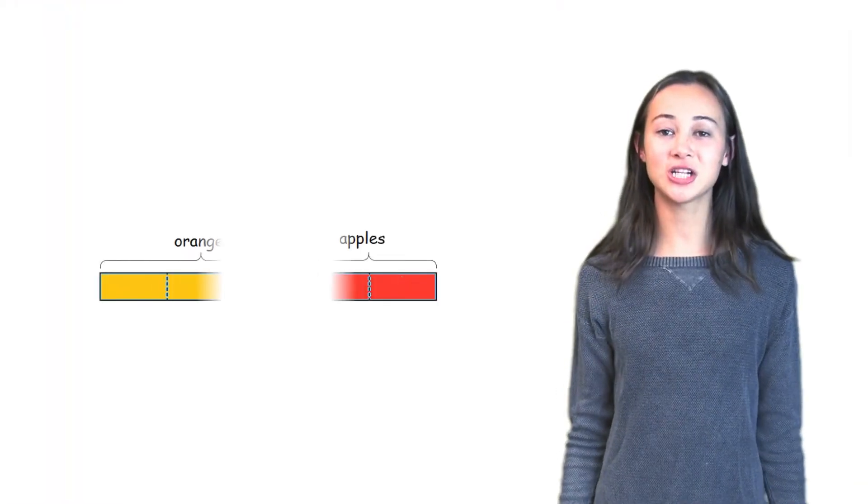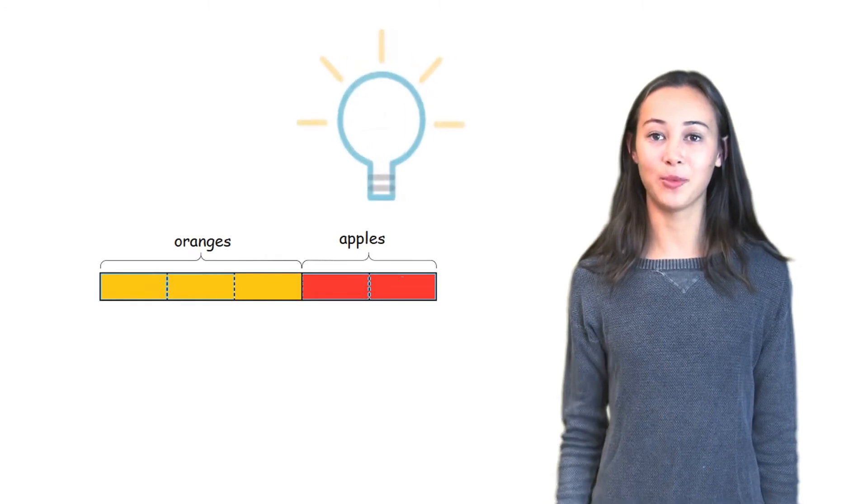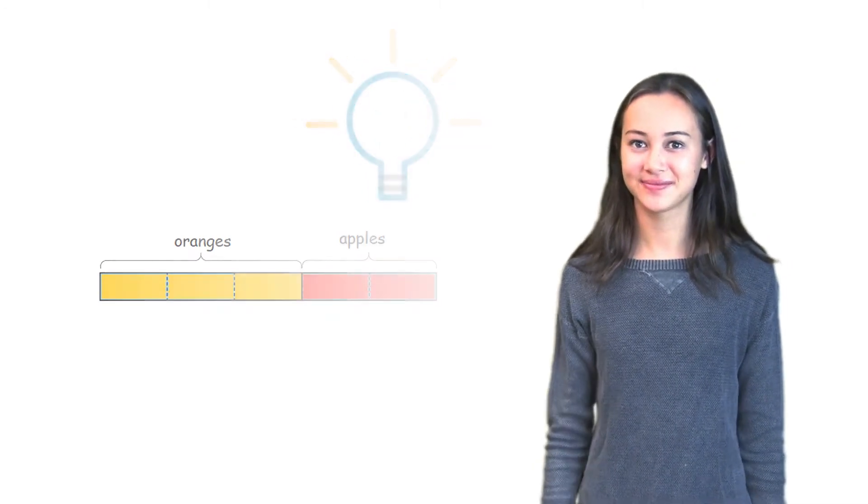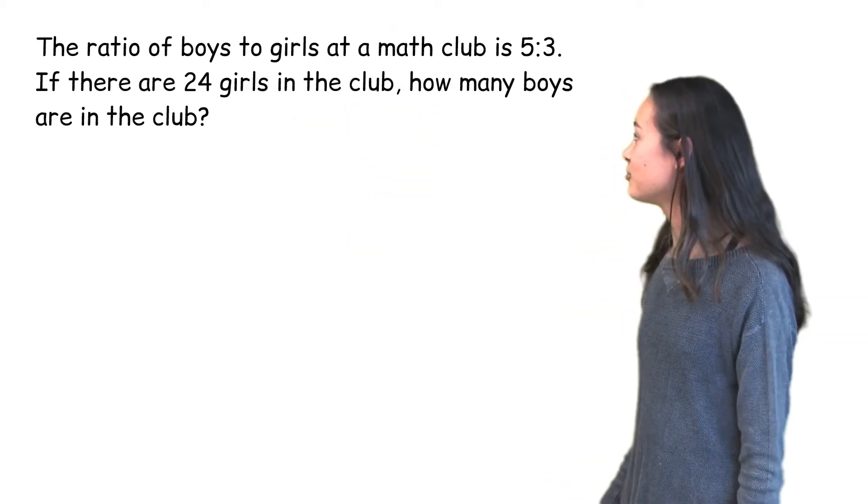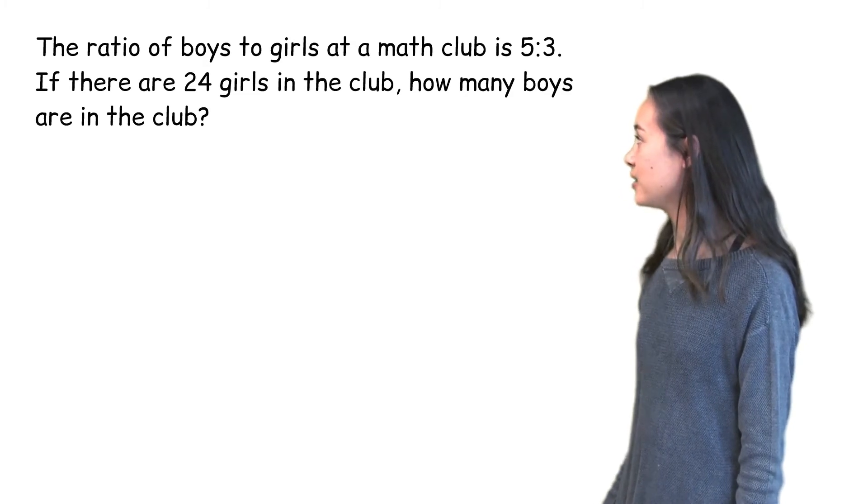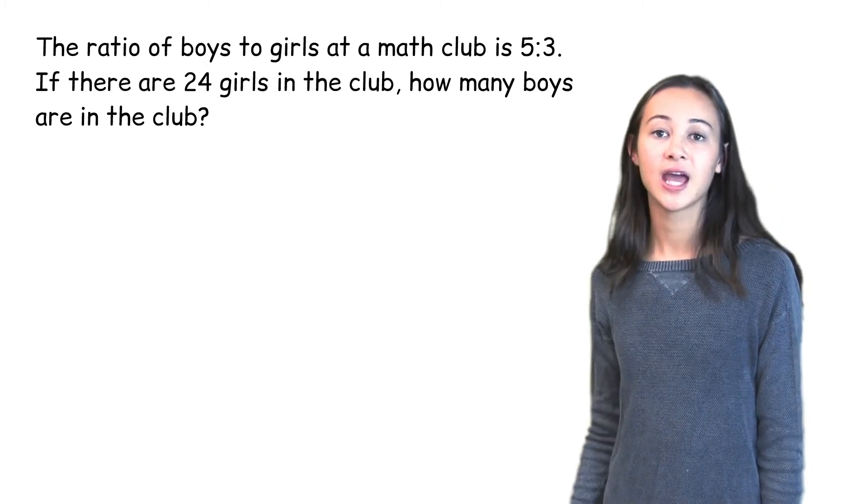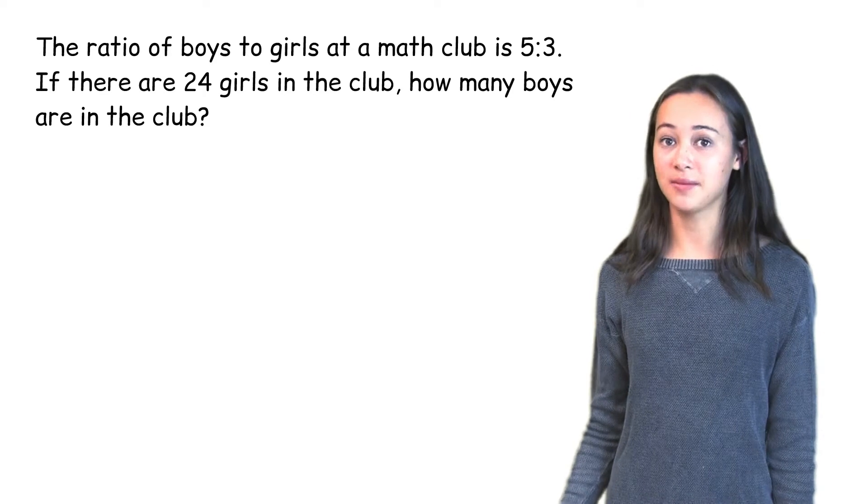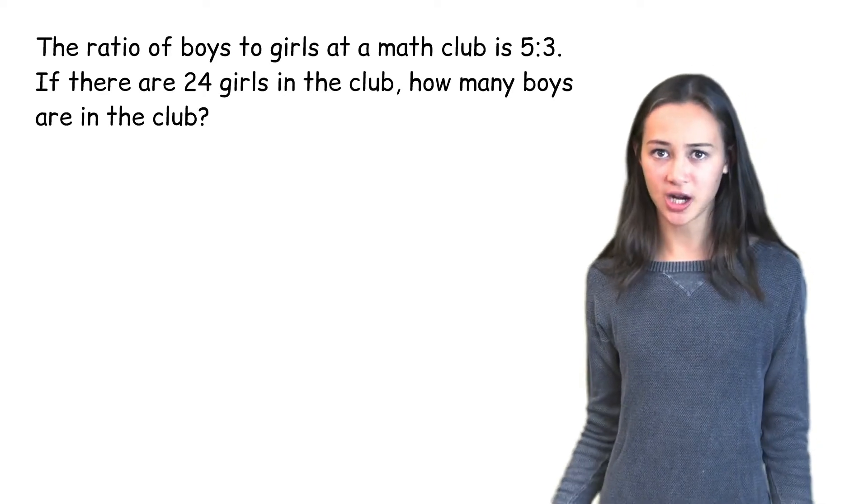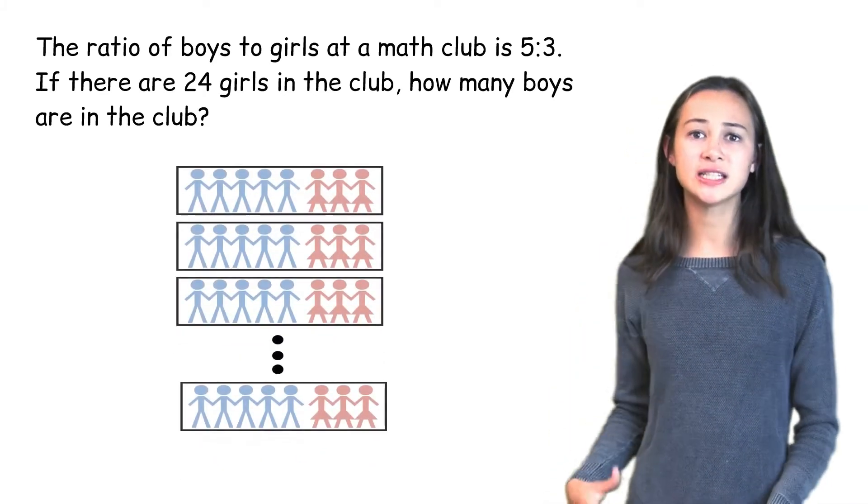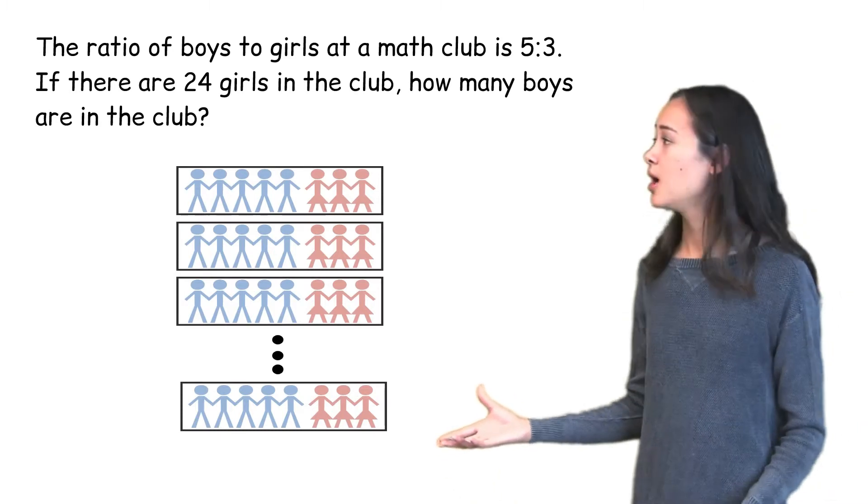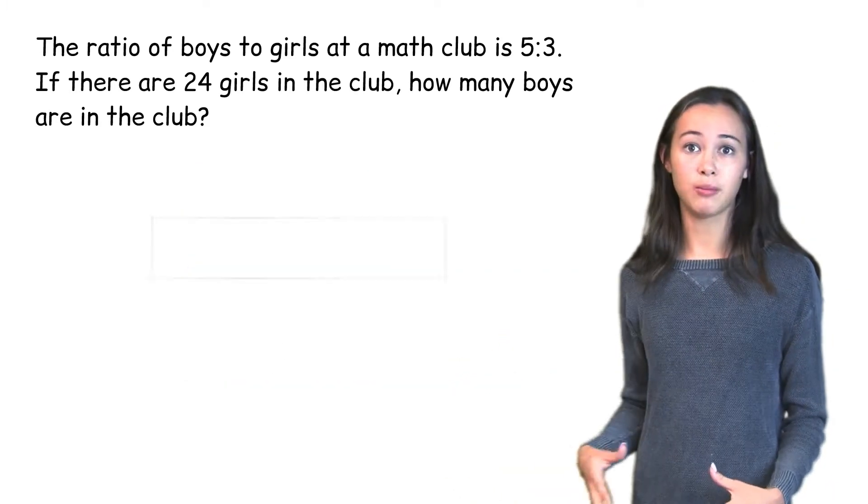Now let's use bar diagrams to help us solve more ratio problems. The ratio of boys to girls in a math club is 5 to 3. If there are 24 girls in the math club, how many boys are there? So we could draw a detailed picture like this one, but instead we can draw a bar diagram.